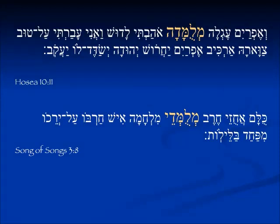From Tanakh, in Hosea 10:11 — 'Ephraim, eglah milu'madah' — Ephraim is a calf who has been taught, who is being taught. Eglah is a calf; here it's a feminine form, and so it takes a feminine verb, milu'madah.